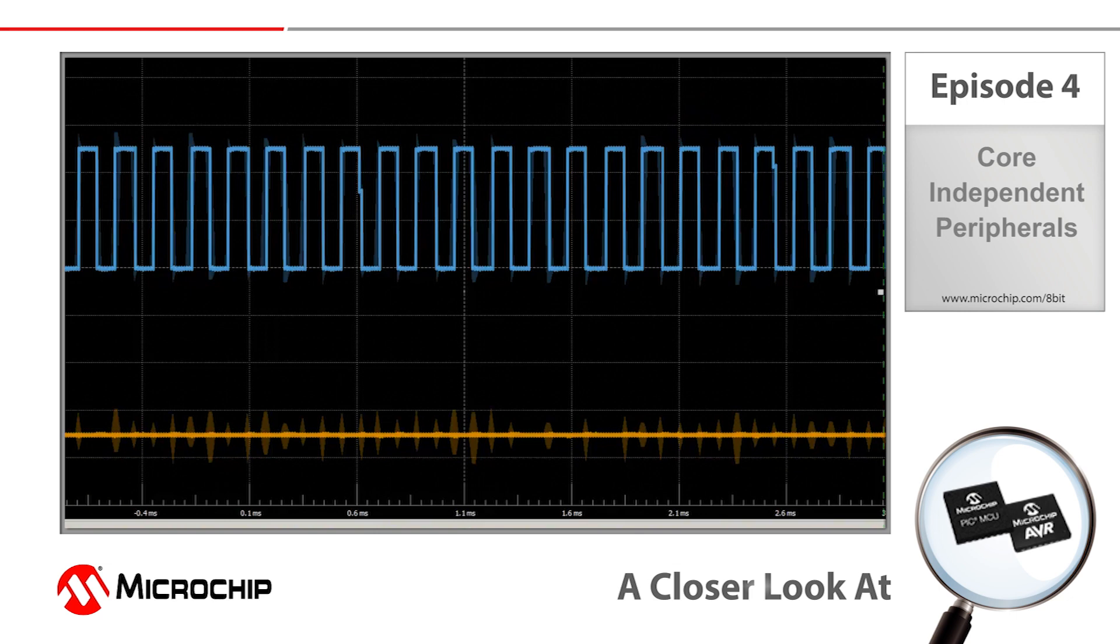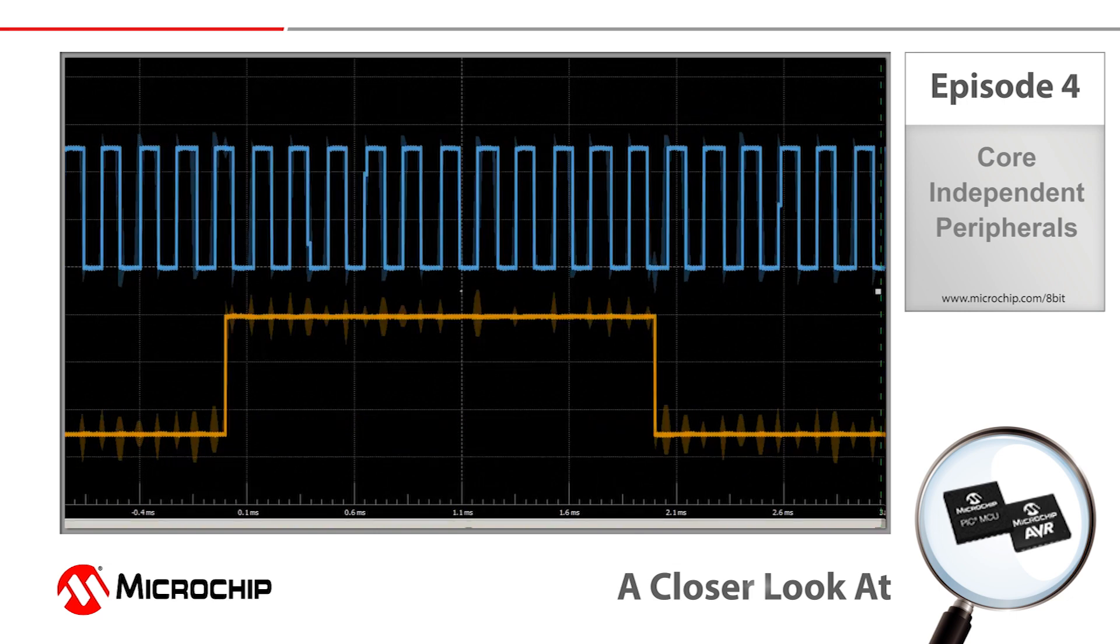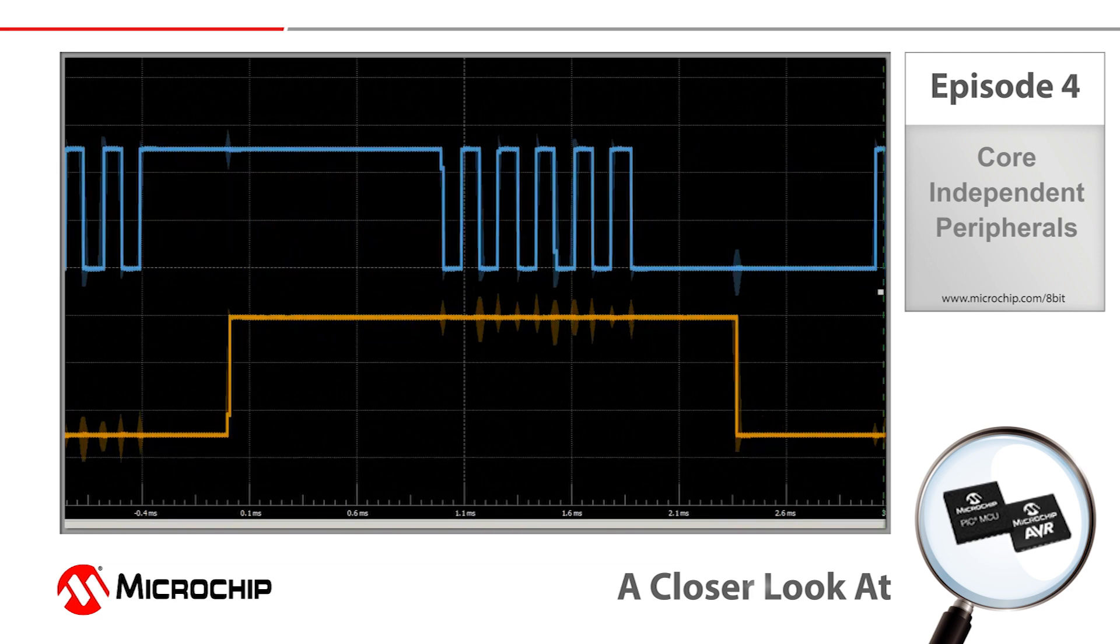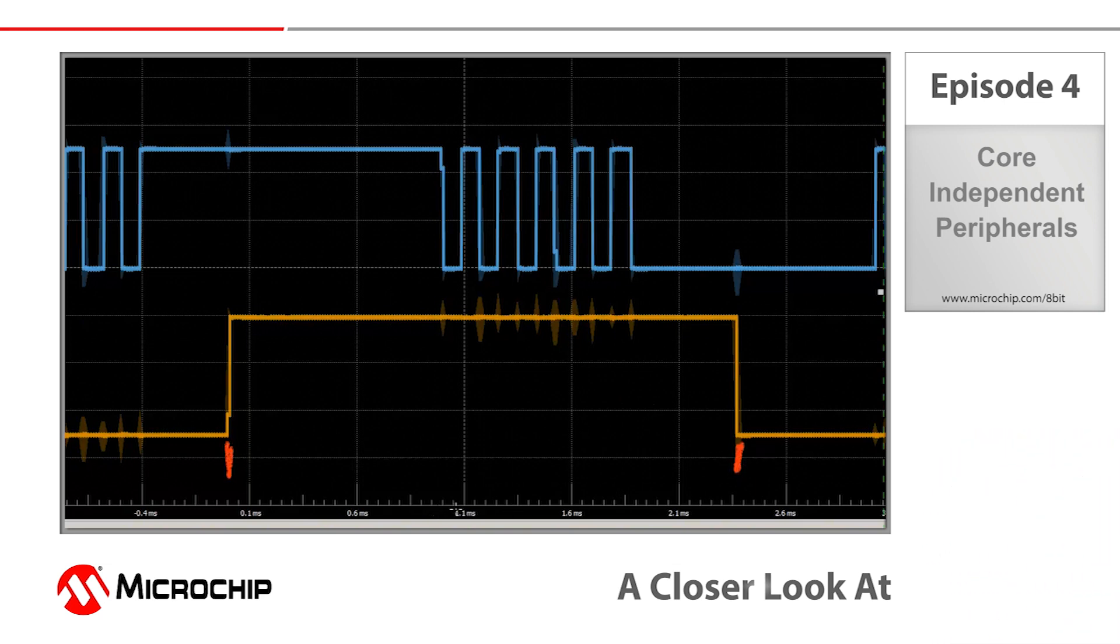One last thing I want to show you here. Remember that we wanted the output pulse to be exactly two milliseconds wide. However, take a look at the software interrupt based version of this application. Now we configure the timer to generate an interrupt at two milliseconds exactly, however, with interrupt latencies and the time it takes to execute the code associated with the interrupt service routines and so on, you can see that our output pulse is actually 300 or so microseconds longer than we want it to be.